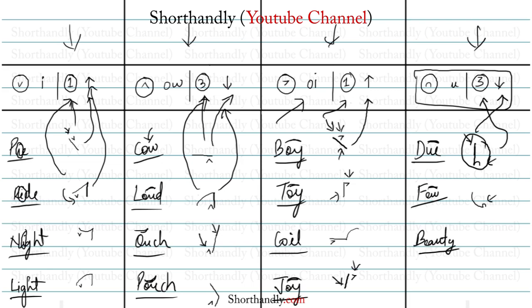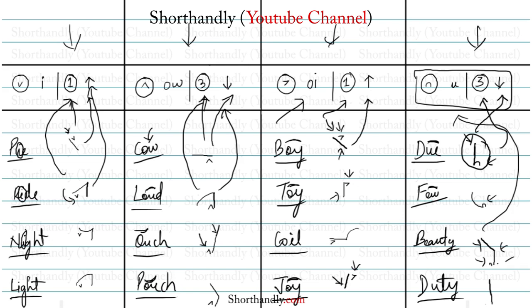Let's take another example: the word 'beauty'. We have the B consonant, then the diphthong on the third place for the 'u' sound, then the T consonant, and a final E vowel for the 'e' sound. The outline is made through the line. For the word 'duty': we have the D consonant, the diphthong on the third place, another D, and the final E vowel. That's all for the diphthongs, and I will see you in the next part.